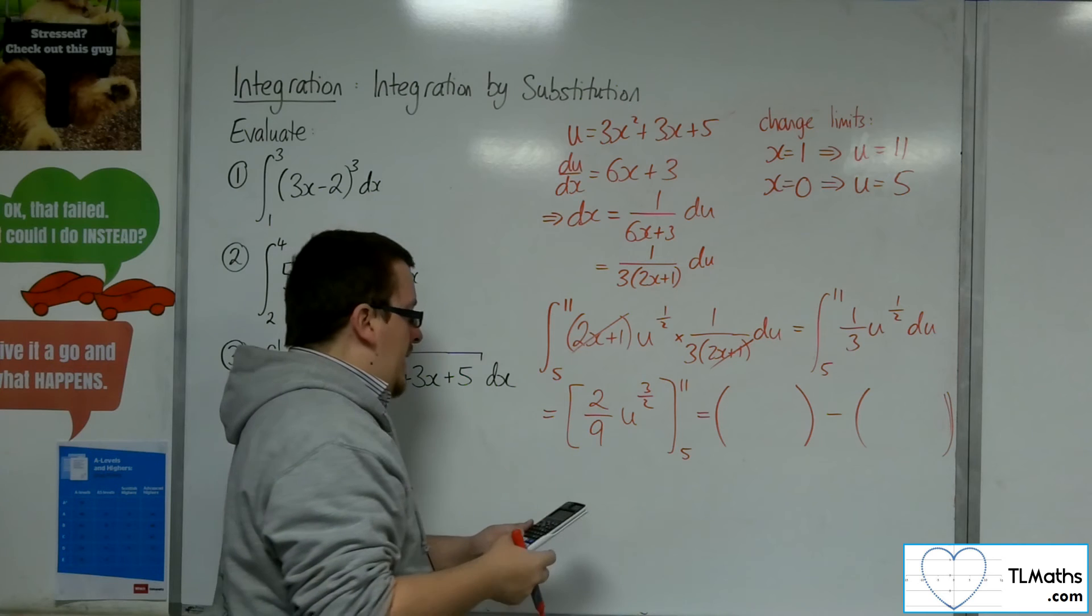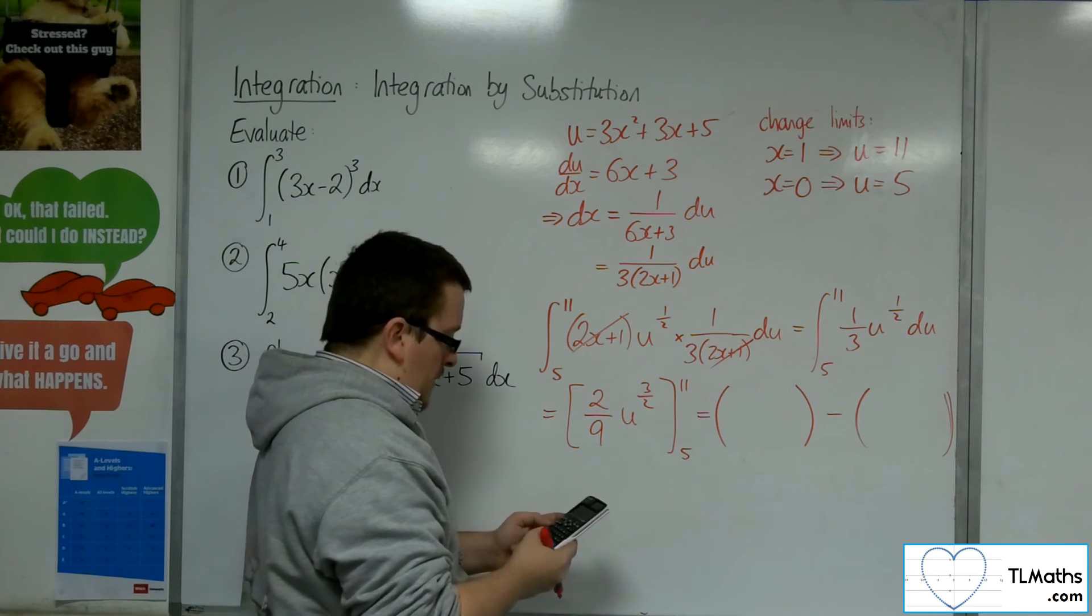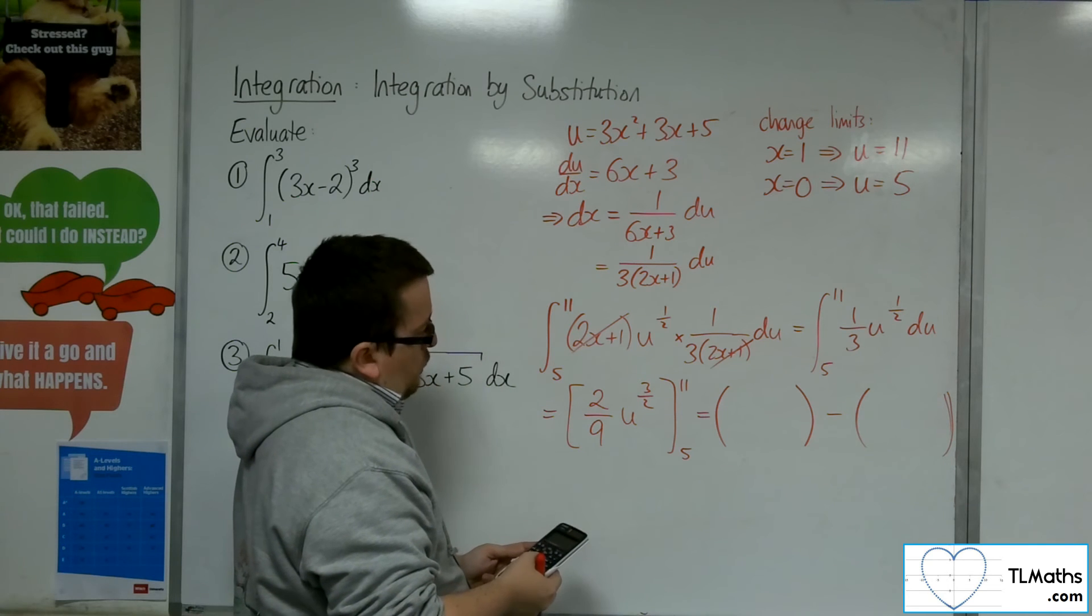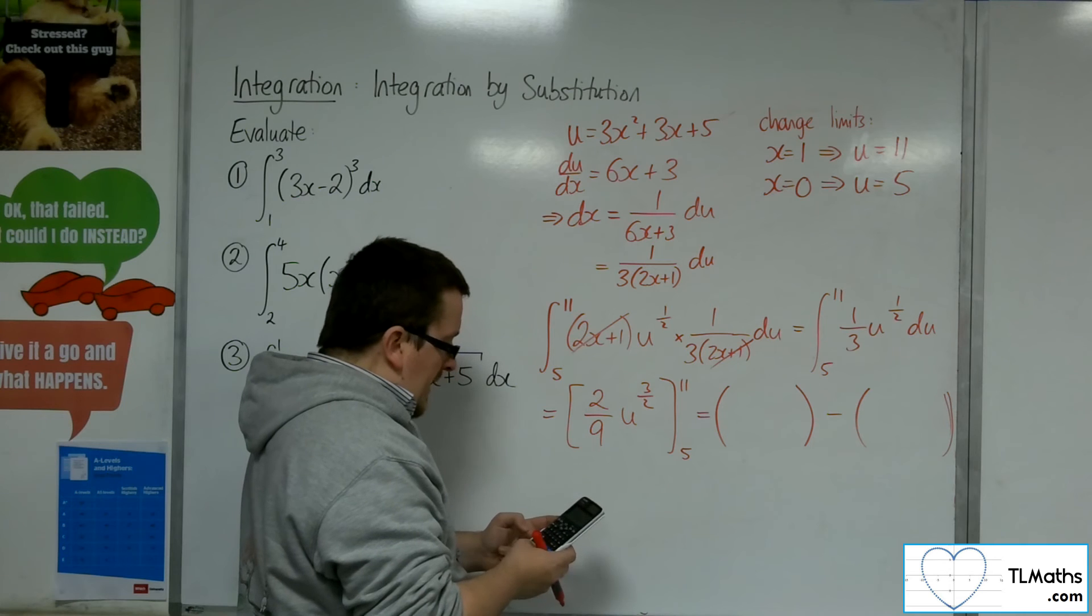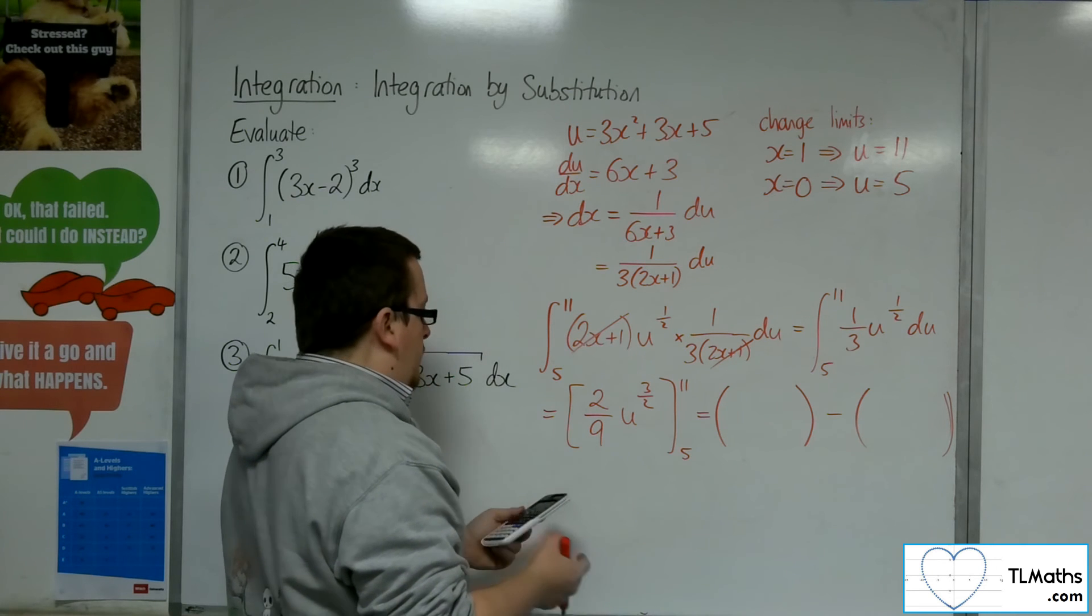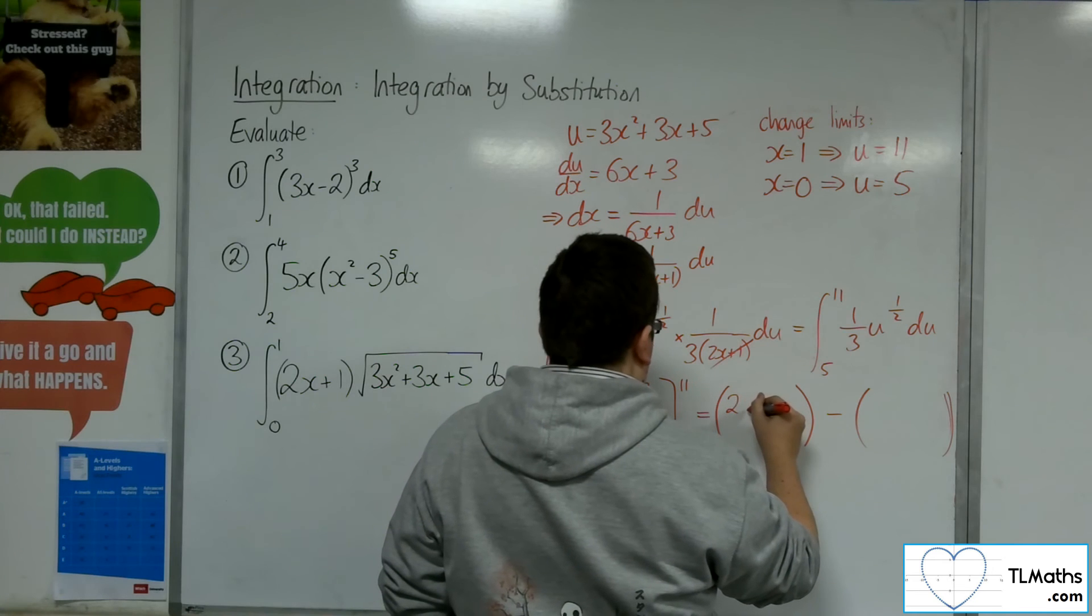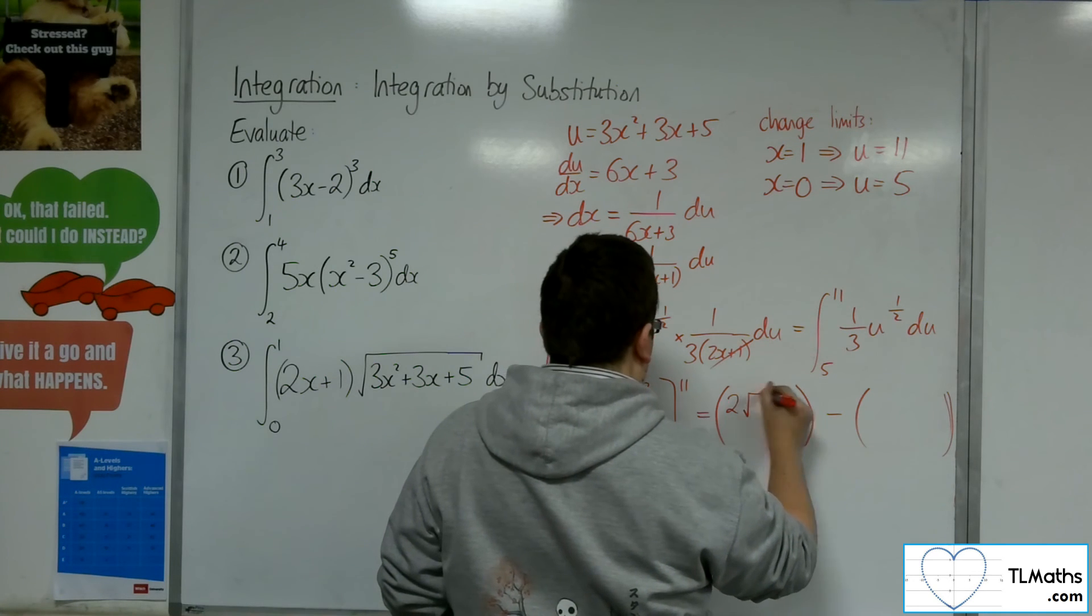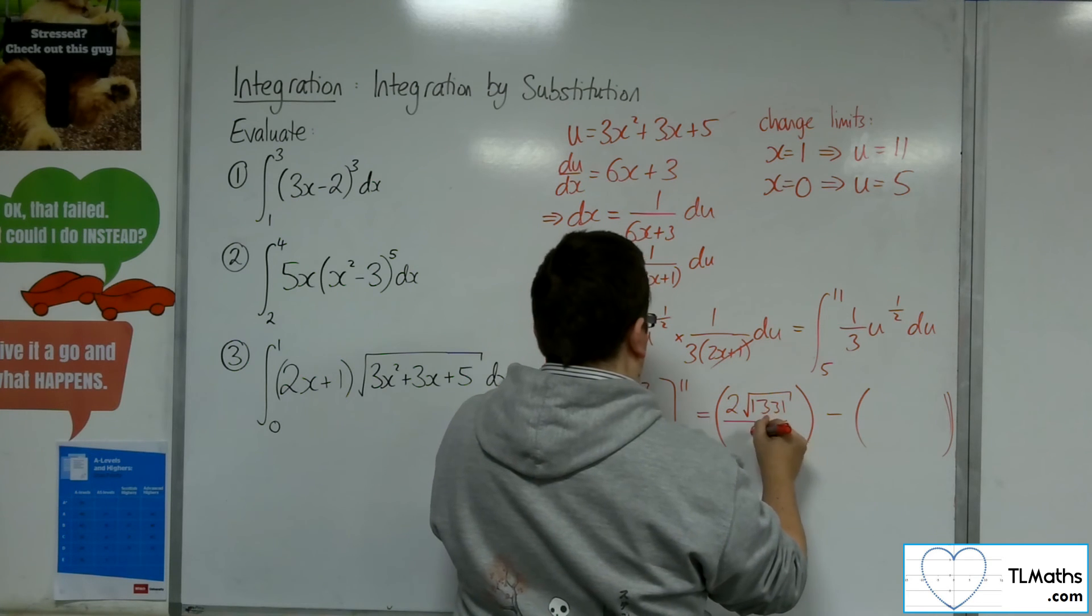So what have I got here? 11 to the power of 3 over 2. How do I want to write that? Well, 11 cubed is 1,331.